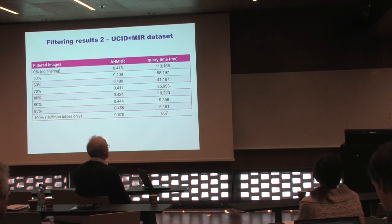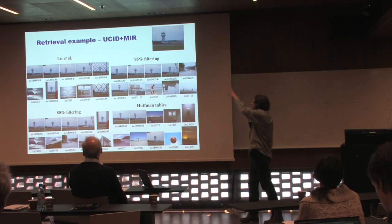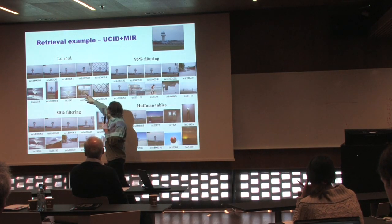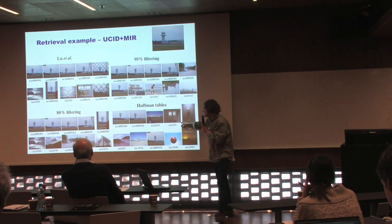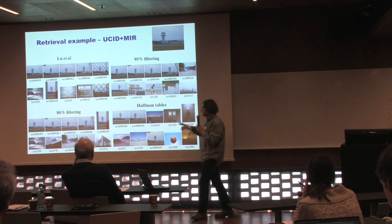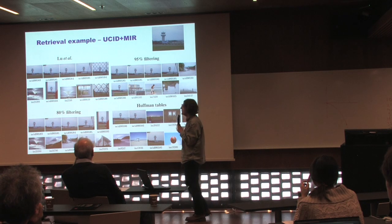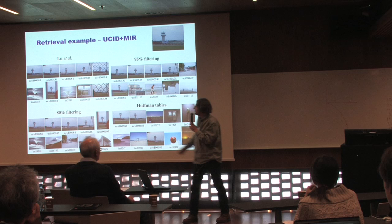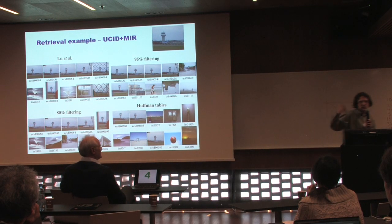A visual example from the extended MIR dataset: the query image is shown at top. The compressed-domain method by Lou and colleagues retrieves 7 correct matches in the top 10. Using only Huffman tables gives just 2 correct matches in the top 10 — reinforcing why it is used as a filter rather than standalone. With 80% filtering, we get 6 correct matches, nearly matching the secondary method. With 95% filtering, results are slightly worse but the speed-up is about 1 to 10.